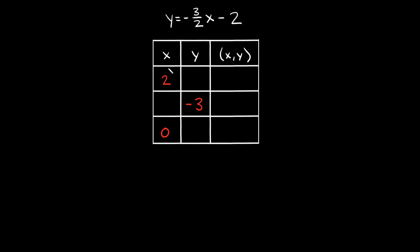A couple things to point out about this table: we have basically three sections. We have the x-coordinate or x-column right here, we have your y-coordinate or y-number right here, and then you have your ordered pair — x comma y — which we'll be able to figure out from our first two columns, the x-column and the y-column.